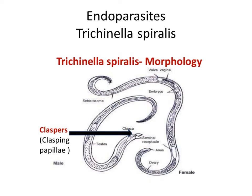Firstly, about the endoparasites — 'endo' means inside, so these are internal parasites. The species Trichinella spiralis is a parasite which invades mainly the muscle tissue of large mammals.